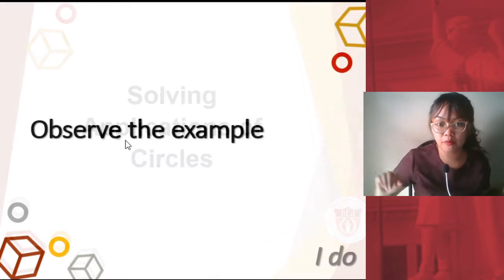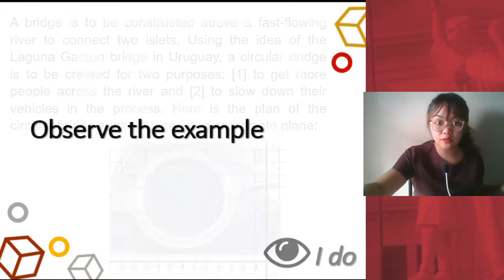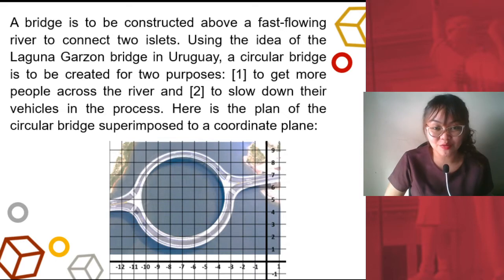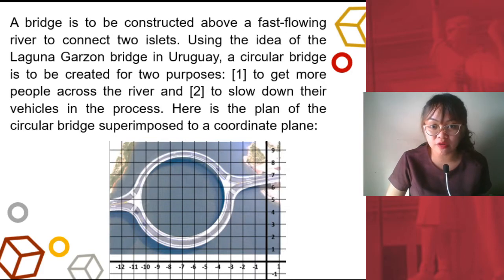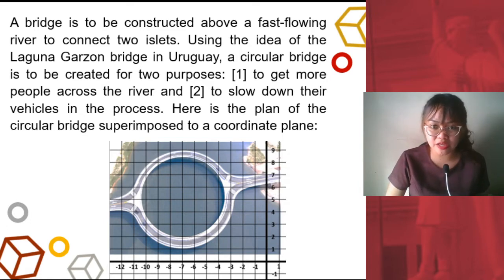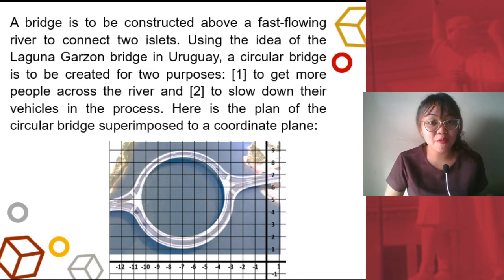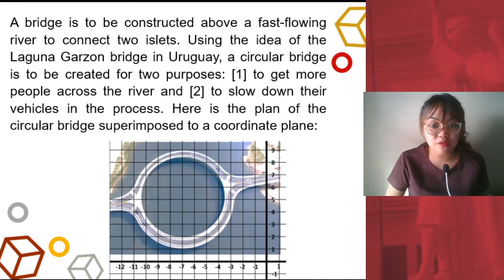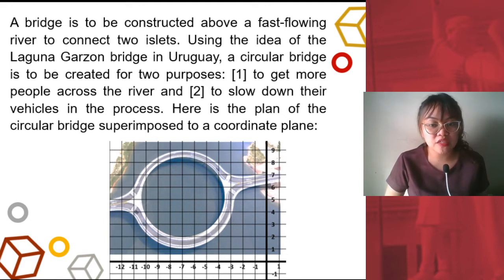This is the word problem. I want you to observe the example. I will do it with you. Let's read together: A bridge is to be constructed above a fast-flowing river to connect two islets. Using the idea of the Laguna Garzon Bridge in Uruguay, a circular bridge is to be created for two purposes: one is to get more people across the river, and two, to slow down their vehicles in the process. Here is the plan of the circular bridge superimposed to a coordinate plane.